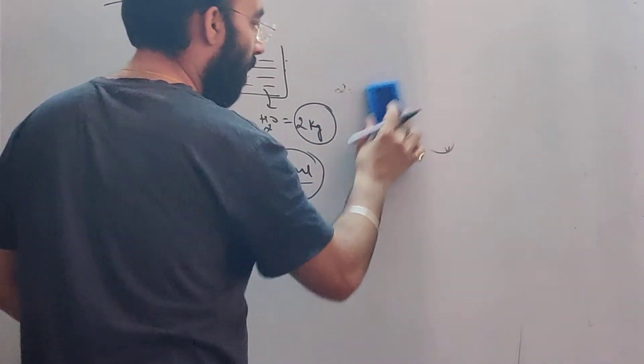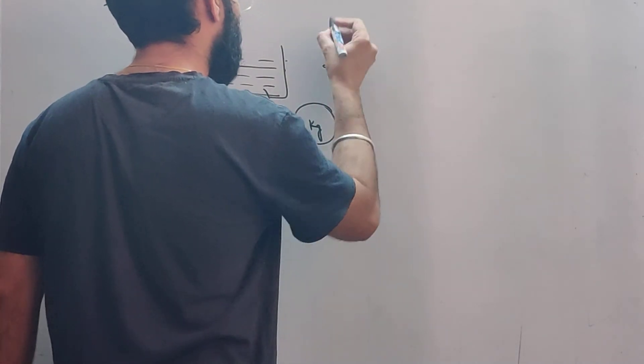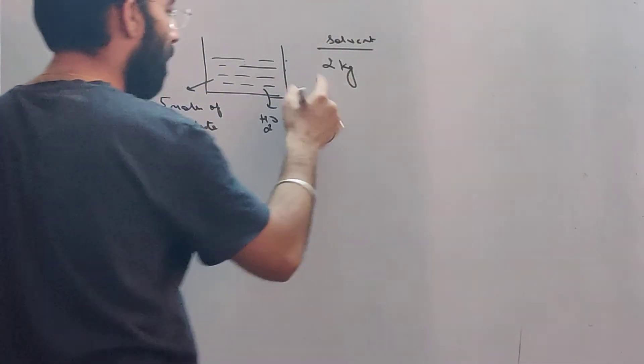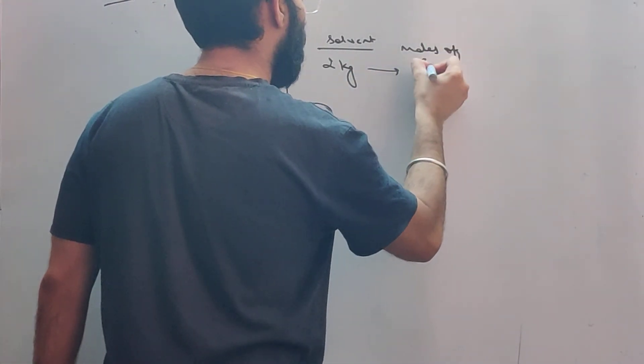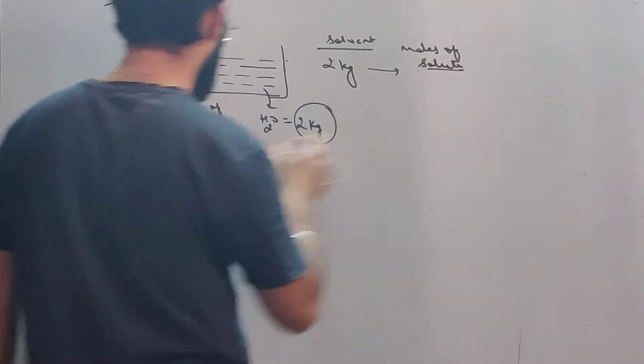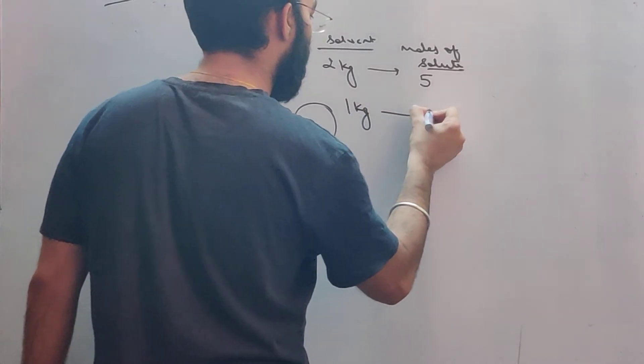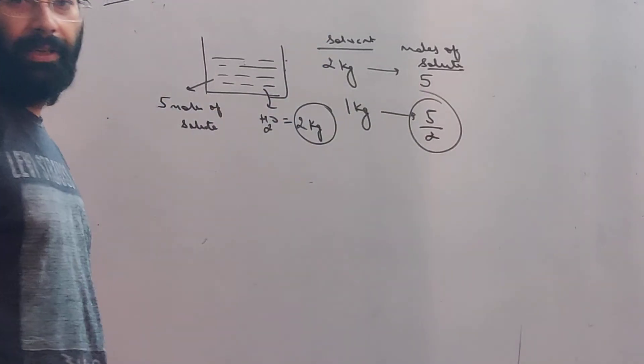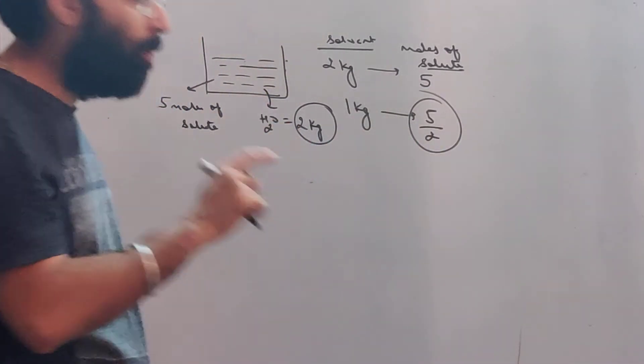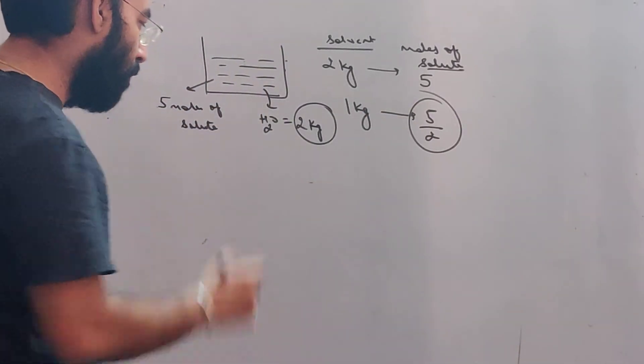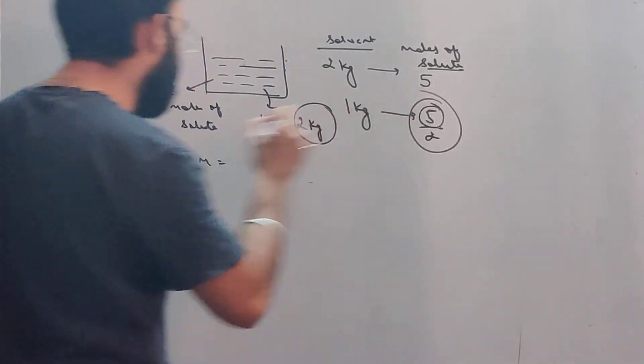So now see, let's do this. Now see that in 2 kilo solvent, 2 kilo solvent, the moles of solute are 5. So in 1 kilo solvent, moles of solute will be 5 by 2. In 1 kilo solvent we get 5 by 2. That is molality. So to find molality, what did I put on top? I put 5. What was 5?